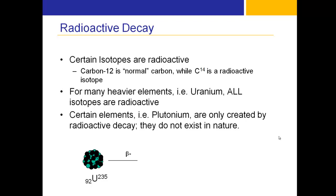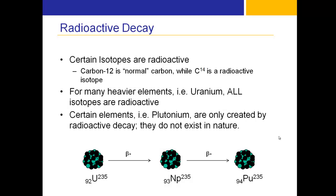In this example, uranium-235 undergoes beta-minus decay to neptunium-235, which then undergoes another beta-minus decay to plutonium-235.